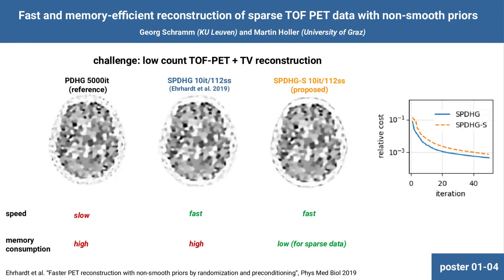In this poster we present a modification of the stochastic primal-dual hybrid gradient algorithm for fast reconstruction of PET data with non-smooth priors. Our modification allows to substantially reduce the memory consumption of SPDHG for sparse data by preserving the speed of convergence.